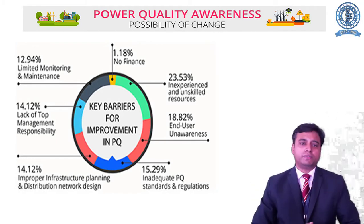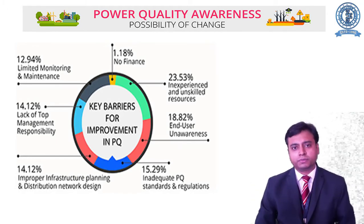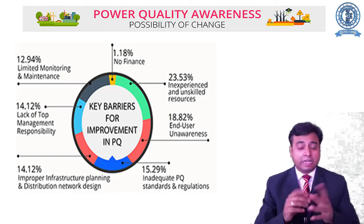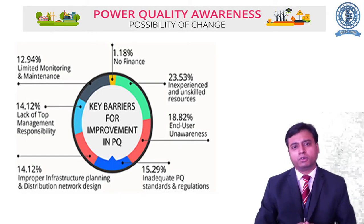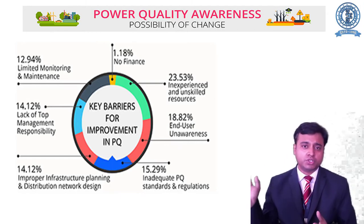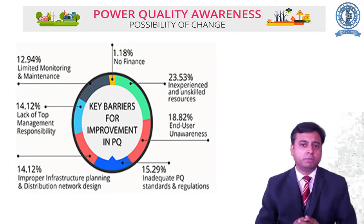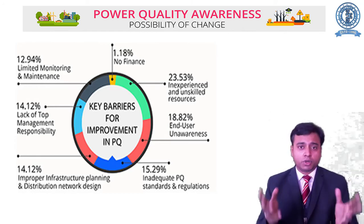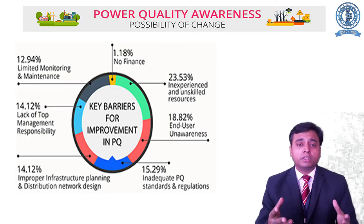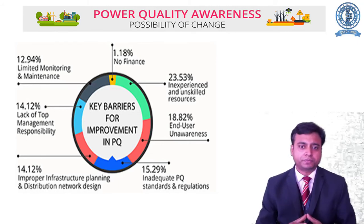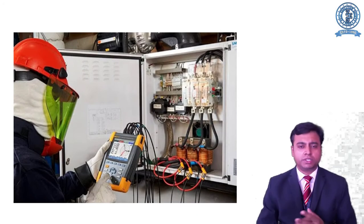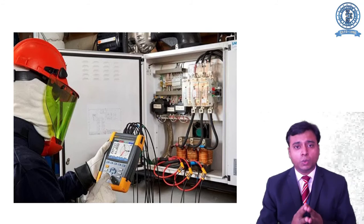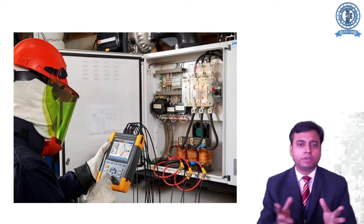What are the challenges in implementation of power quality improvements? The major challenge is unskilled and inexperienced resources. Secondly, there are inadequate standards and regulations for power quality. Finance is available but we don't have the trained resources. There is a lack of top management responsibility and very limited monitoring and maintenance. These are the problems because of which power quality is not being successfully implemented everywhere. Here is a picture showing how you can measure power quality through a power quality analyzer and check whether the power quality in your area is good or bad.